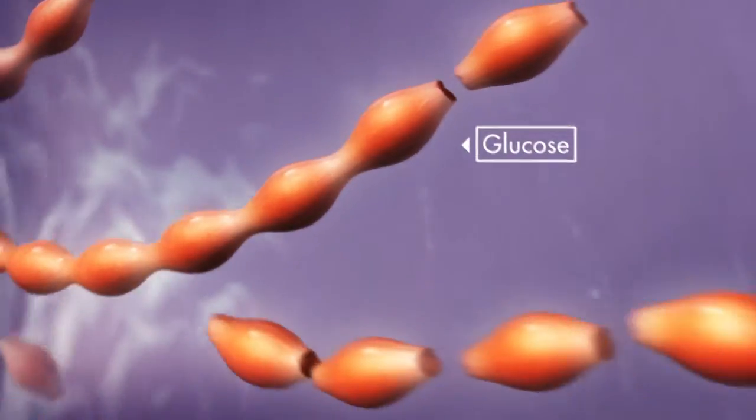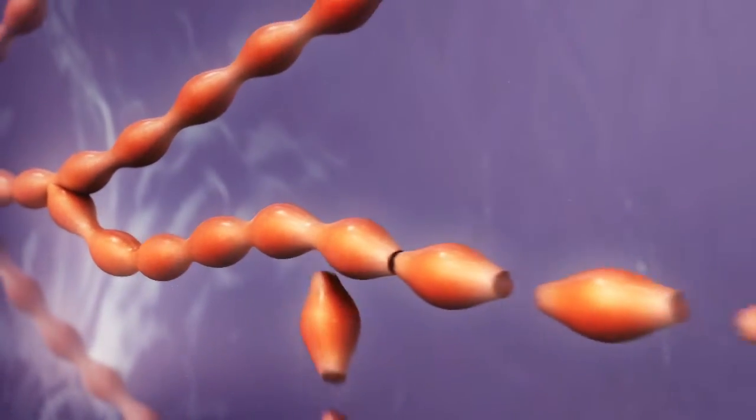In a muscle cell, glucose molecules come together in long chains to form glycogen.